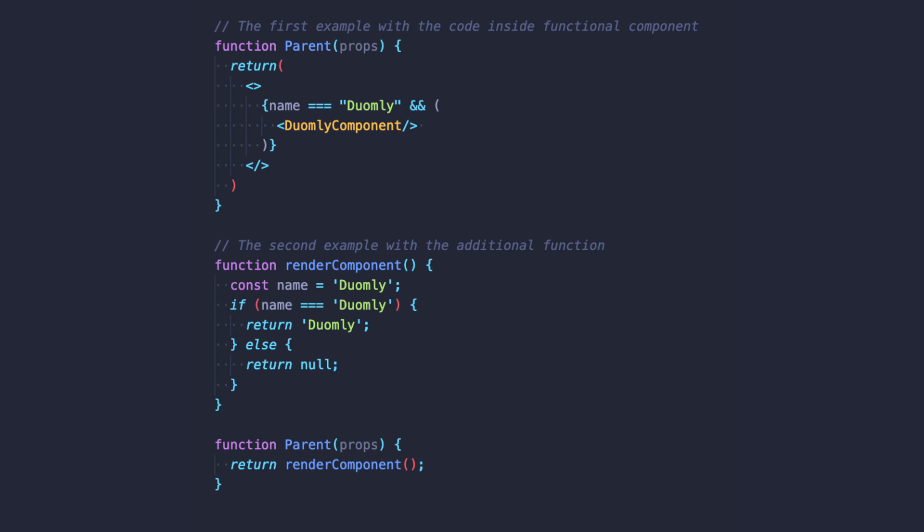Let's take a look at the code example. I created both of them here. The first one is about normal conditional rendering inside the return, and the second one is conditional rendering based on a function. Great!